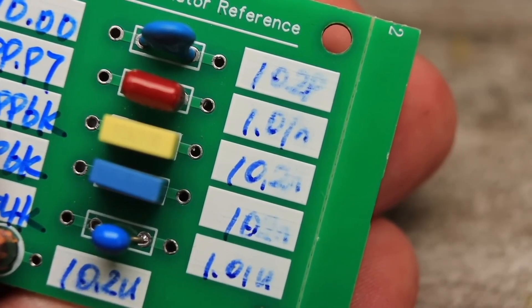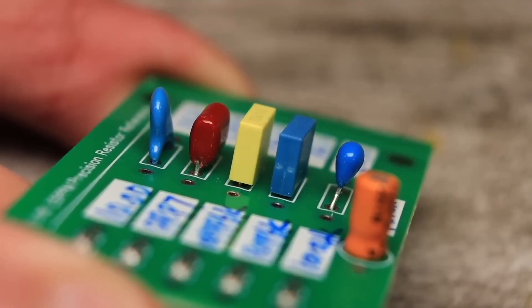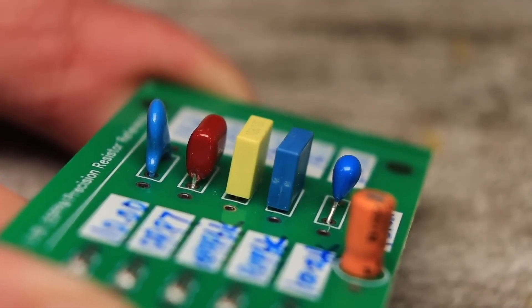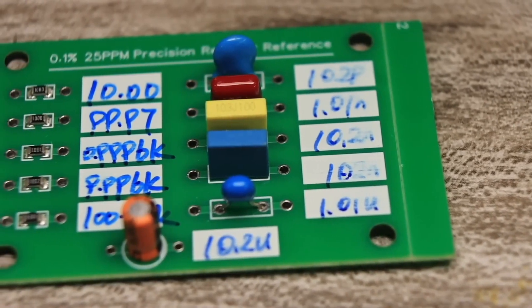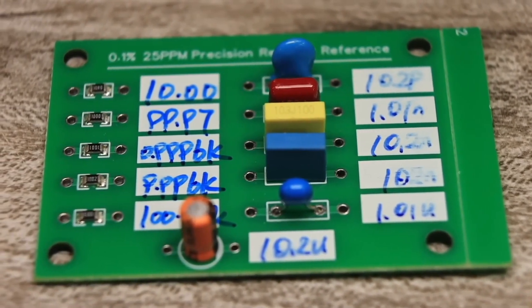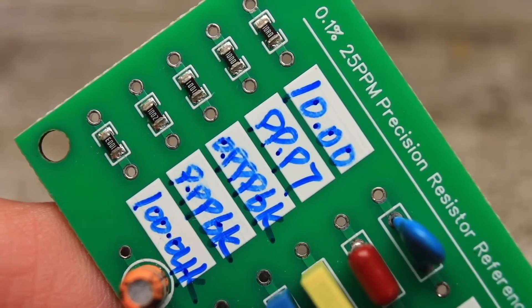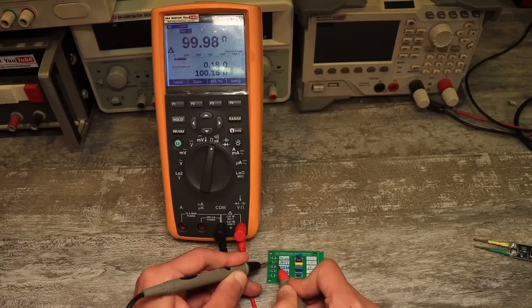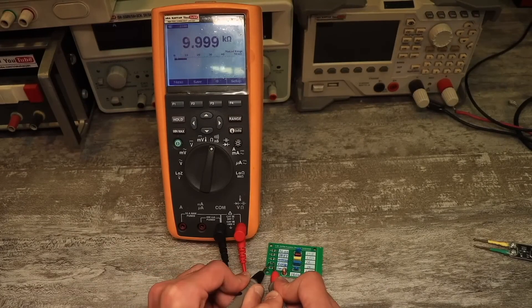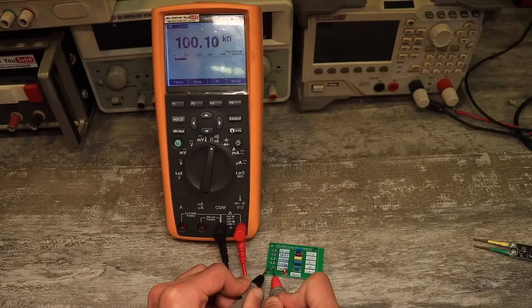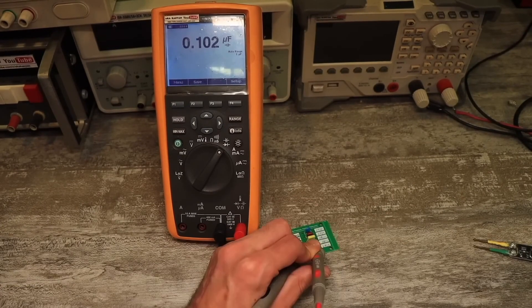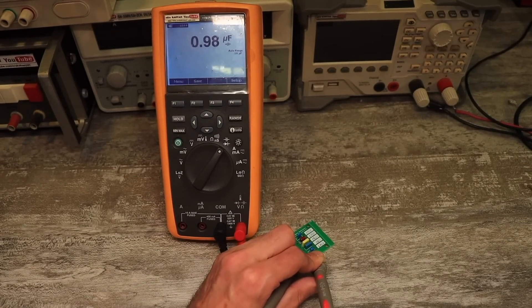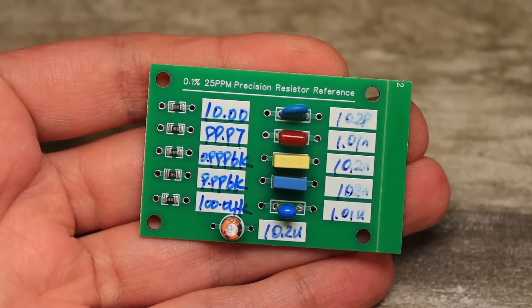There are also capacitors: 100 picofarads, 1 nanofarad, 10 nanofarads, 100 nanofarads, 1 and 10 microfarads. Apparently, the Chinese measured all of this additionally, and next to each component its actual value is written. I checked this board, and it turned out that the resistors really do fall completely within the 0.1% tolerance. The capacitors are good, too. At least their capacitance matches what's written. The board costs about two and a half to three dollars.